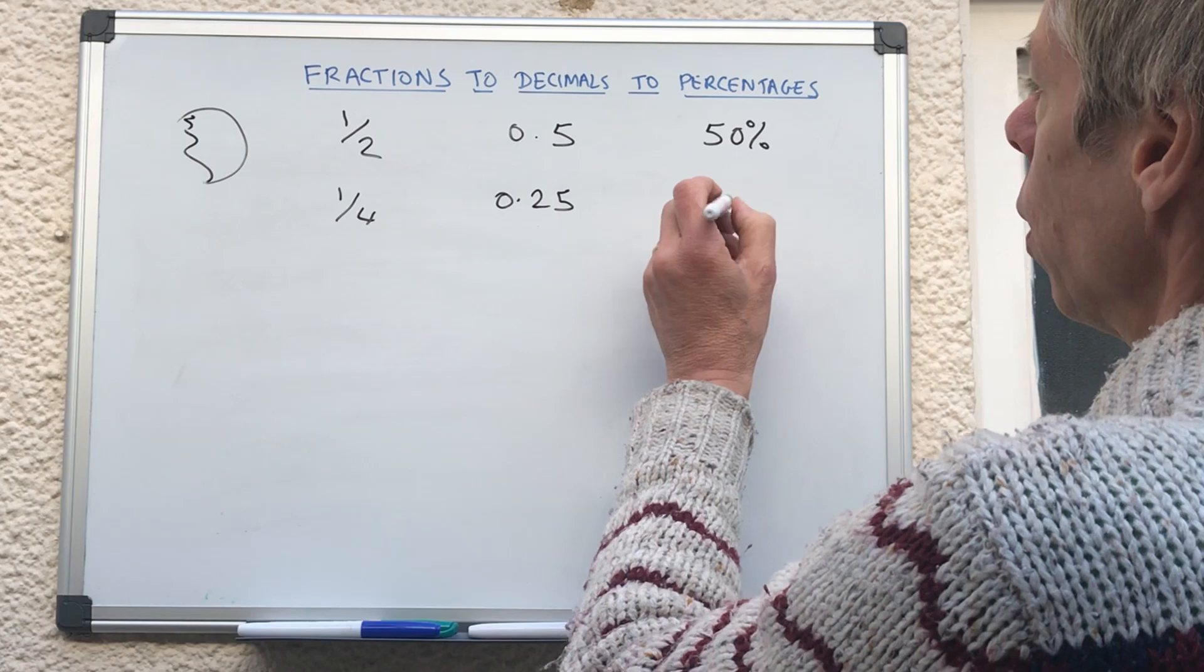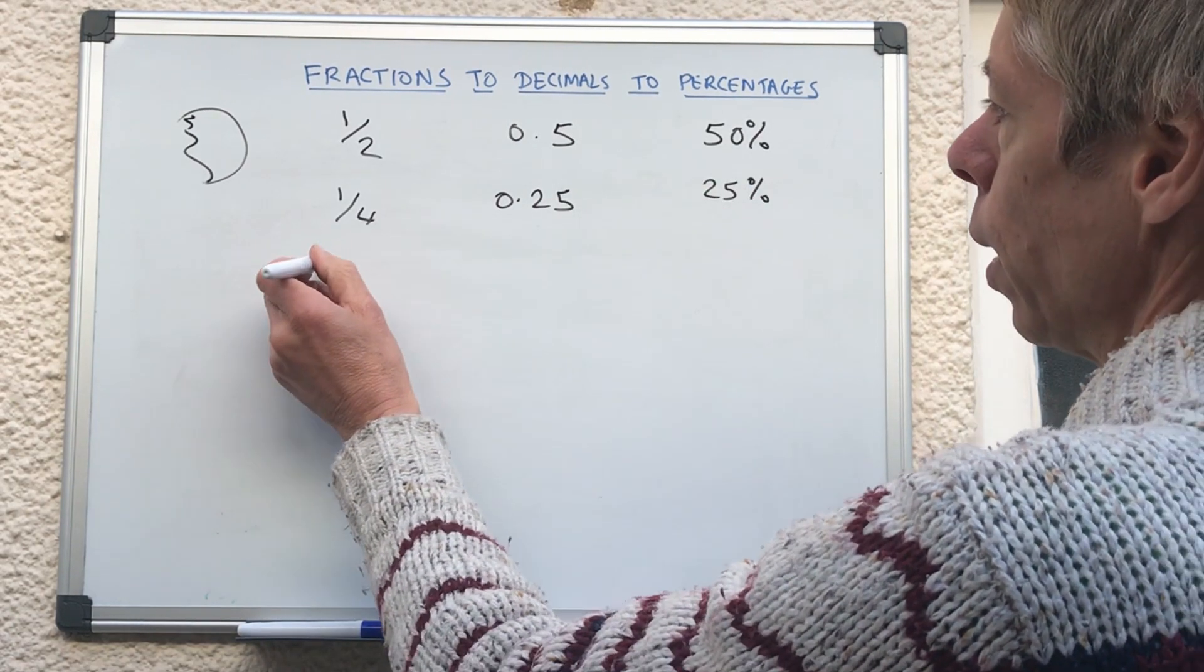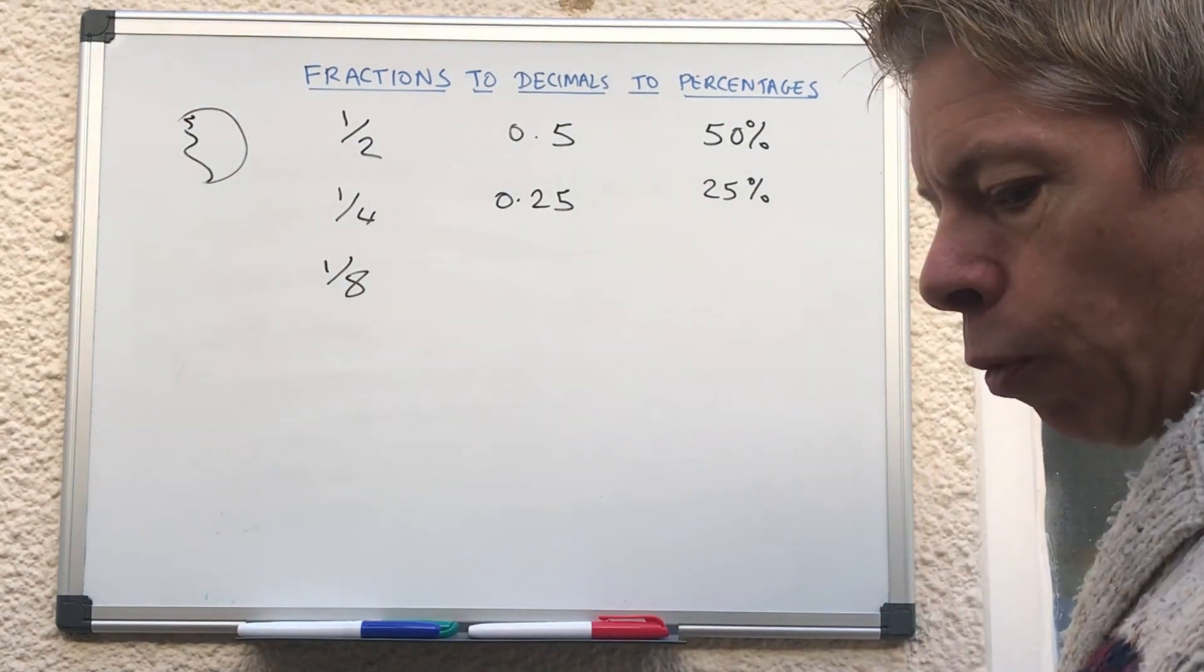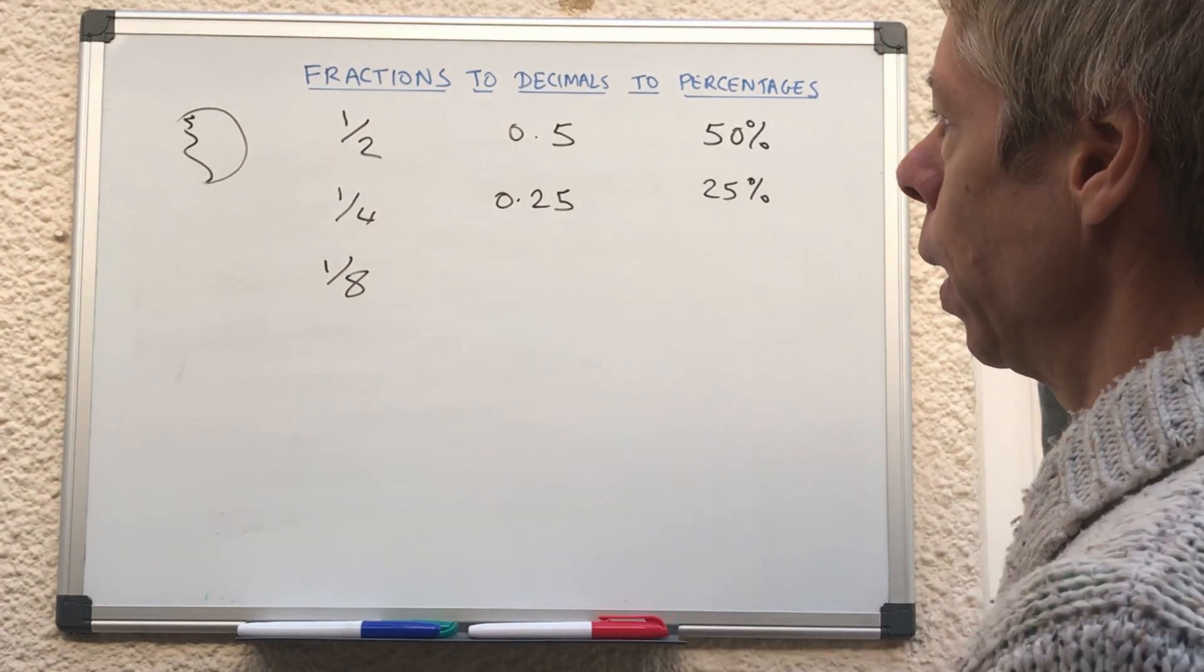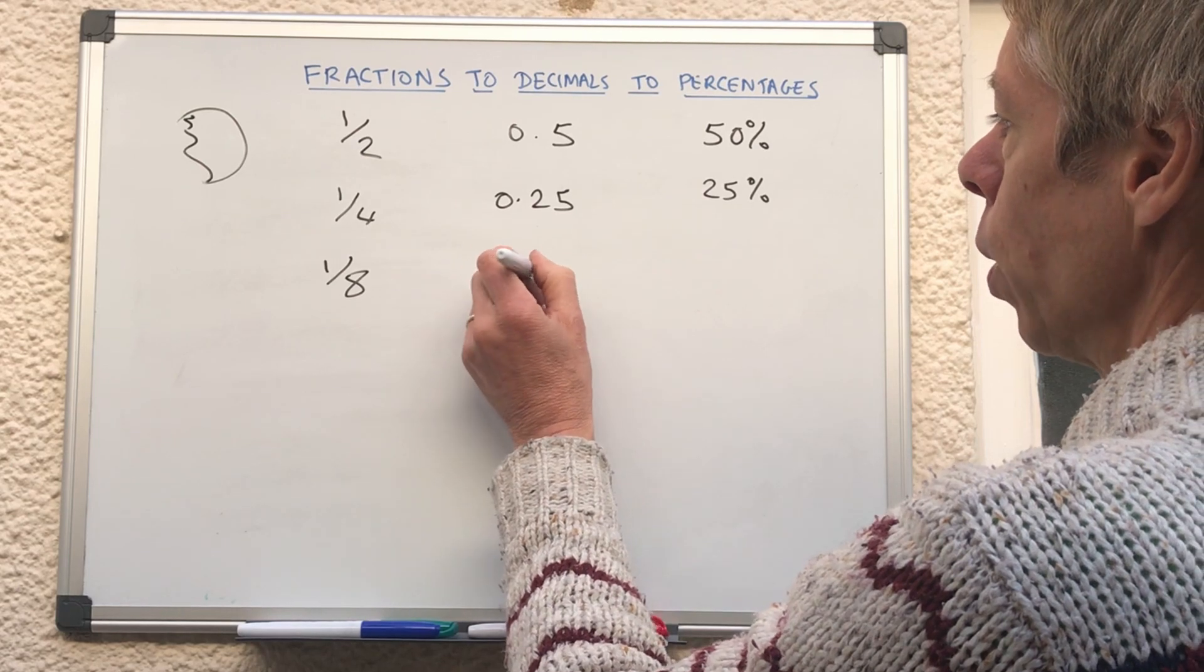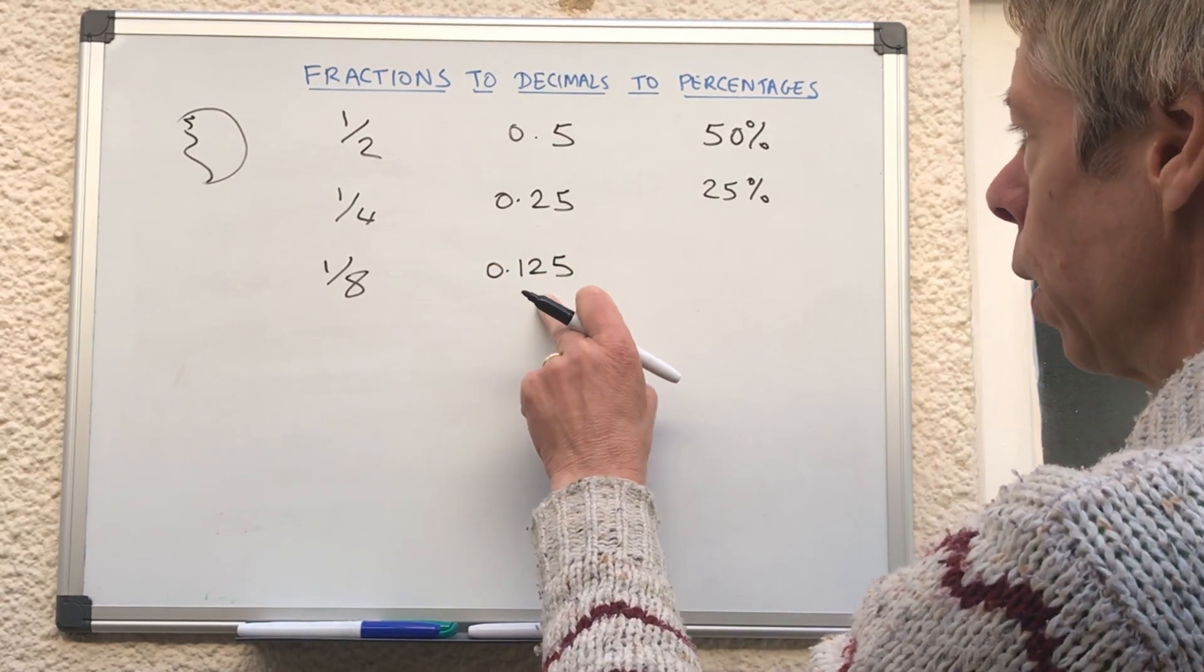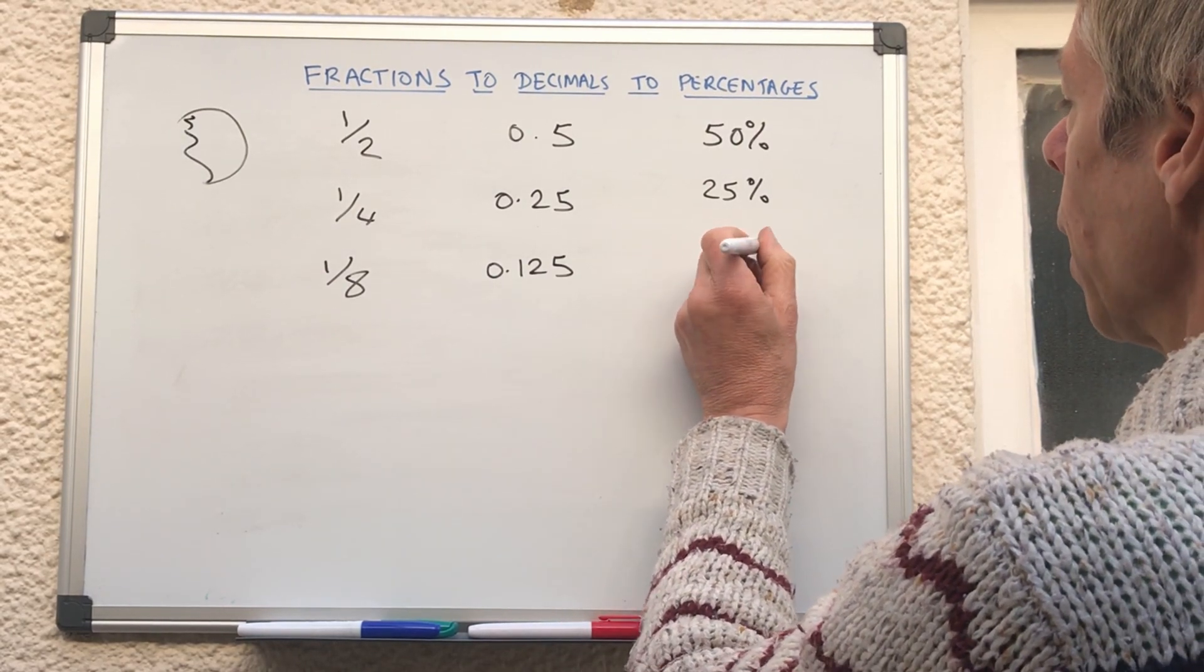0.25, which is 25%, and then what is an eighth? A lot of people think the only way to know how to do an eighth is to learn it. And it's actually 0.125. So if you know that an eighth is 0.125, that's a really useful thing to know. And that will be 12.5 as a percentage.